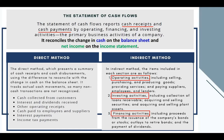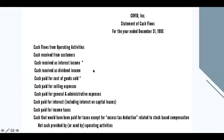For investing activities, this would include collection of loans receivable, acquiring and selling securities, and acquiring and selling plant assets. As to financing activities, it would include proceeds from the issuance of the company's bonds or stocks, outlays to retire bonds, and the payment of dividends. Here's a complete list of all the cash flows from operating activities, from investing activities, and from financing activities.